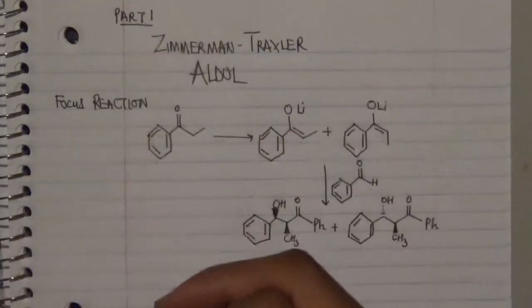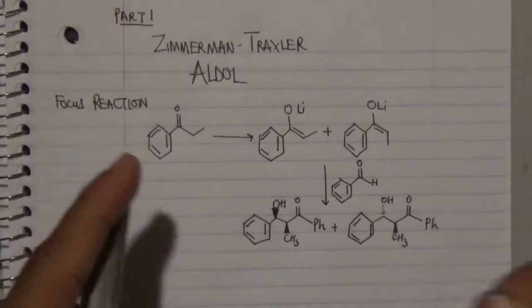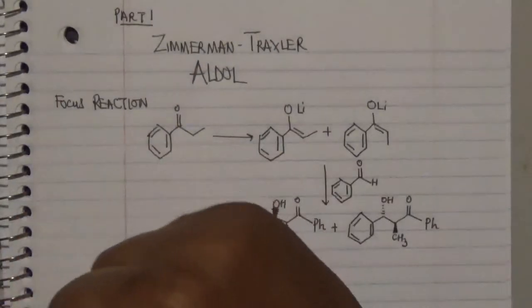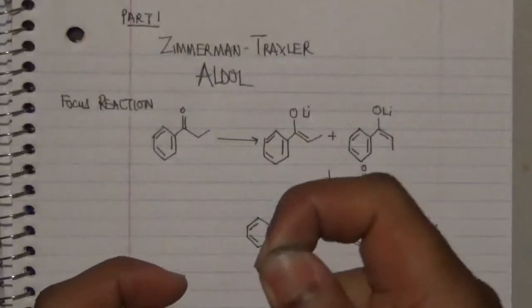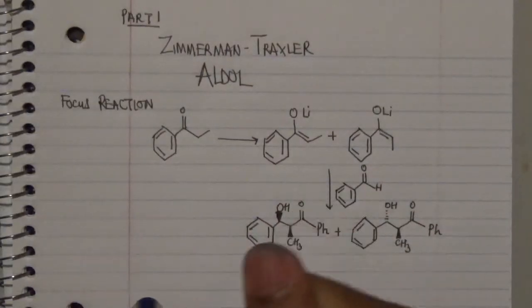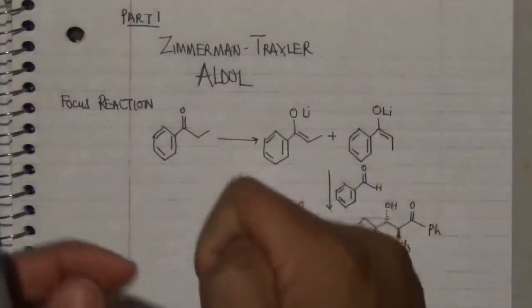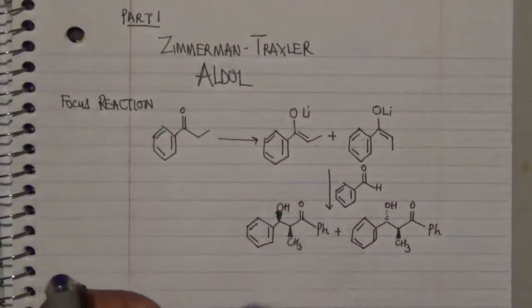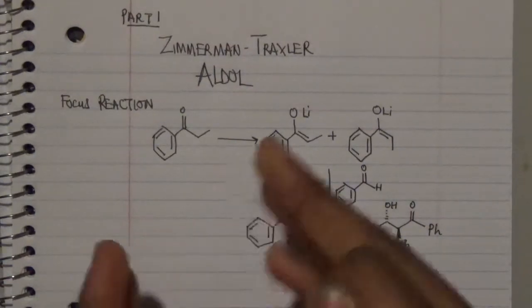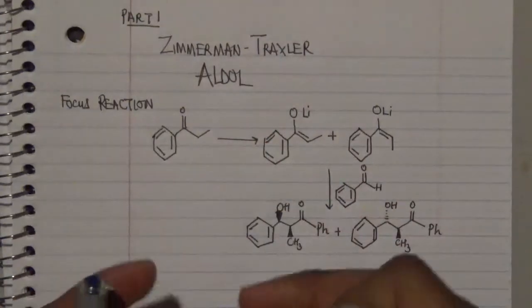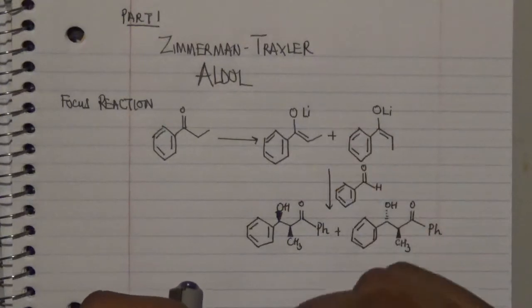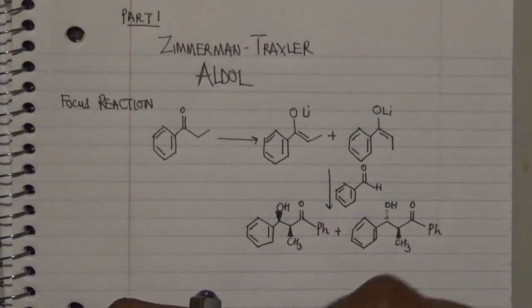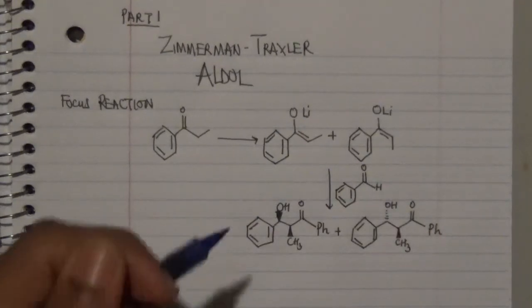Hello everyone, welcome to my channel. In this part one video we're going to be looking at the Zimmerman-Taxol aldol reaction, which is quite connected conceptually to the actual reaction. We need to understand the interaction between carbonyl groups like aldehydes and ketones, and the presence of a critical component: an acidic alpha hydrogen atom that will drive this particular reaction.